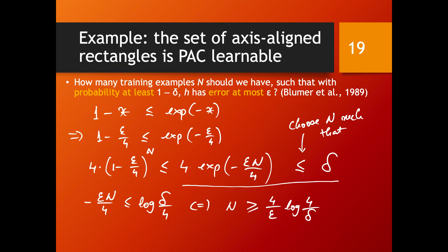So here we have our polynomial approximation in terms of 1/epsilon and 1/delta. This is just one example of a class of problems that is PAC-learnable. There are many other such examples, and it's a good theoretical guarantee that the problems we're working on can be learned efficiently. In the next videos we'll see more concrete examples of how to do this learning and how to choose between different hypotheses.